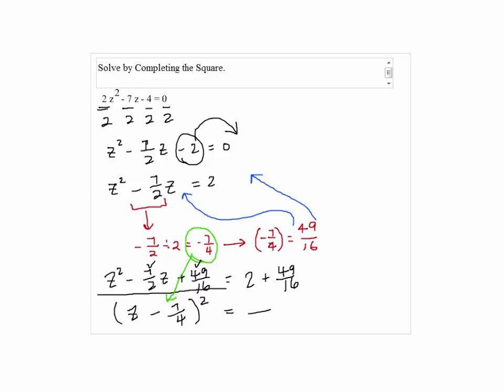So we have z squared minus 7 halves z equals 2 plus 49 over 16, so it will be 32 over 16 plus 49 over 16. That will give us 81 over 16.